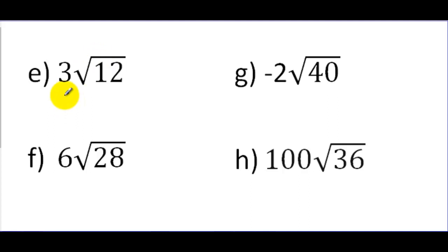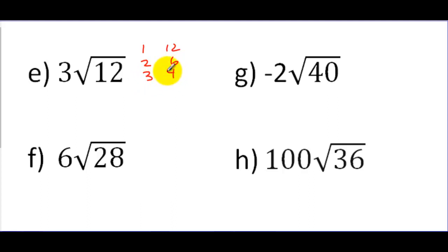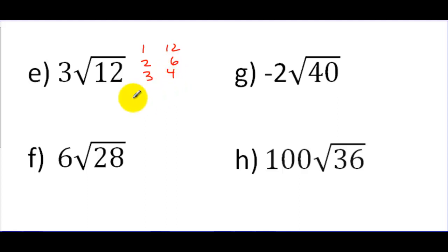We just have to see how we deal with these numbers sitting outside when we go through the simplifying process. When looking at 12, the factors are: 1 times 12, 2 times 6, 3 times 4. We're really not going to worry about 1 as a perfect square — it won't change the value. So I'm just going to focus on 4. I'm going to say this breaks down into the square root of 4 and the square root of 3, and this 3 outside is just going to follow the expression down.